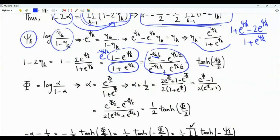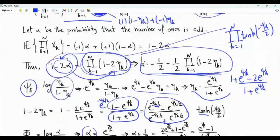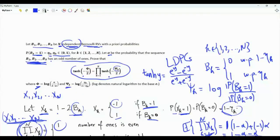Phi is log(alpha / (1 - alpha)). We can write alpha as e^phi / (1 + e^phi). Then 1 minus 2*alpha equals (e^{-phi/2} - e^{phi/2}) / (e^{-phi/2} + e^{phi/2}), which is tanh(-phi/2). This is exactly the result that we are interested in — the tanh rule.